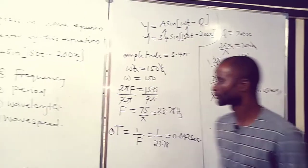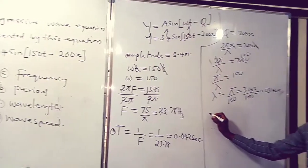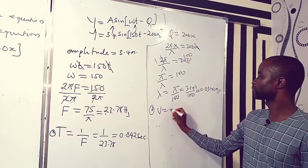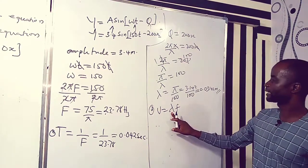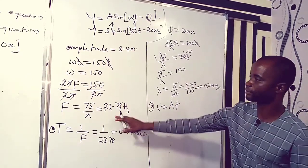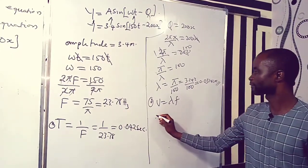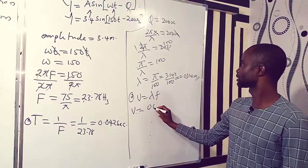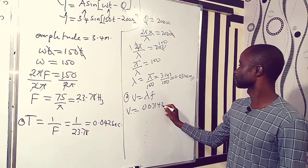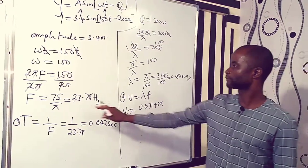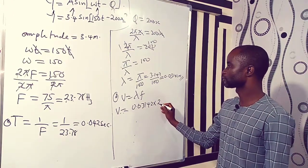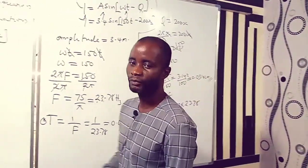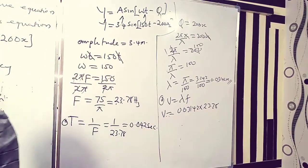Now to get the wave speed, recall the equation V equals lambda times f, where lambda is the wavelength and f is the frequency. Therefore we have V equal to 0.03142 multiplied by the frequency 23.78. When you multiply these values together, it gives you 0.75. V is equal to 0.75 meters per second.